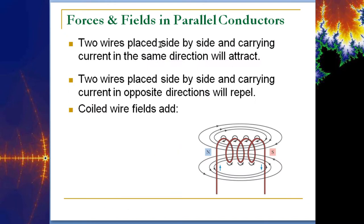Two wires placed side by side carrying current in the same direction will attract; carrying current in opposite directions, they will repel. If you coil the wire together, all of that adds together — you get a summation effect that creates a stronger magnetic field. All the magnetic fields rotate in the same direction through the middle of the coiled wire.